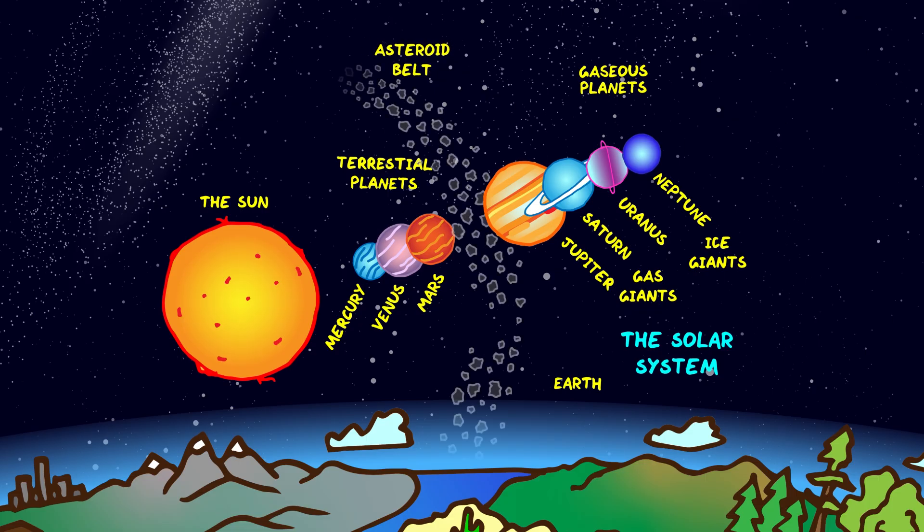In between Mars and Jupiter we've got an asteroid belt which is the relic of the stuff of the early solar system which we think never formed a planet due to the strong gravitational effect of Jupiter.